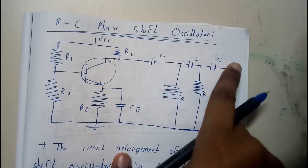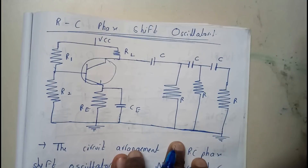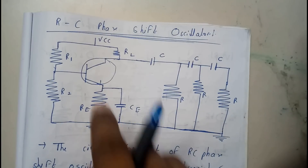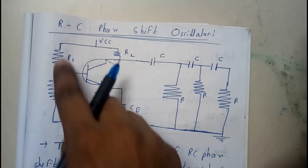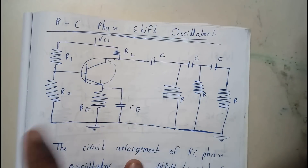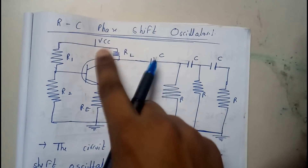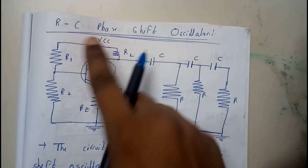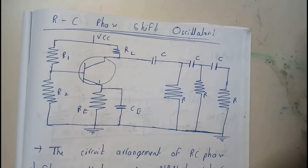We have three resistors and three capacitors, with a capacitor CE, and the load resistance above. VCC will be the supply above. I hope everyone can remember the diagram.